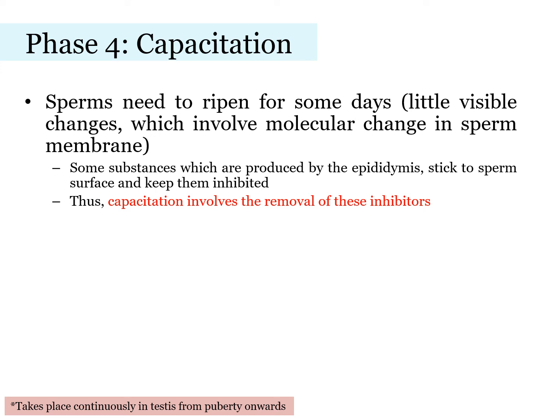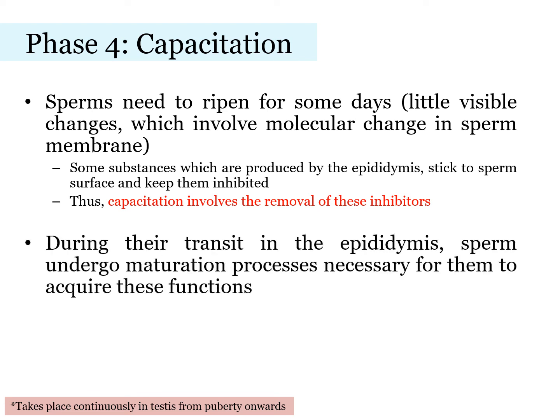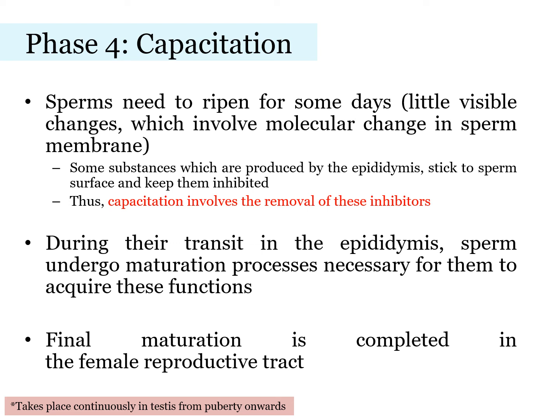The last phase is capacitation. Sperms that are detached from the wall of the tubules need to ripen for some days. They will go through capacitation as they transit through the epididymis. Remember, one of the functions of the epididymis is to bring sperms to maturity. In the epididymis, inhibitors that stick on the sperm surface are removed. Sperms are ready once capacitation is done. However, the final maturation is completed once the sperm is in the female reproductive tract. You will learn about this part in the next topic, human fetal development.